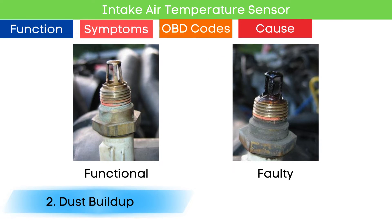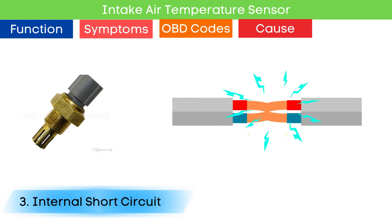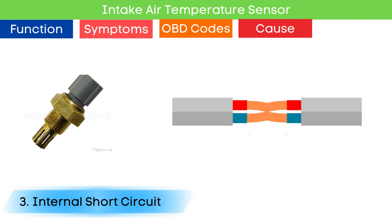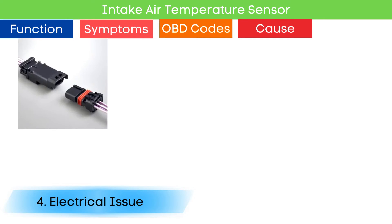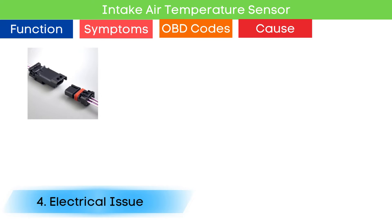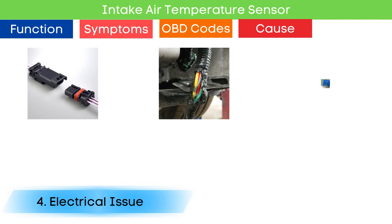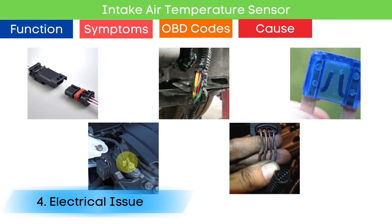Second: dust buildup. Over time, dust deposits can accumulate on the sensor, hindering its ability to measure the temperature of intake air accurately. Third: internal short circuits. Electrical issues within the sensor itself, such as short circuits, can prevent it from sending correct signals to the engine control module. Lastly: electrical issues. Poor connections across electrical connectors, broken wiring, blown fuses, loss of ground, or issues with previously repaired wires can disrupt the connection with the IAT sensor.